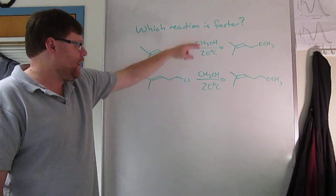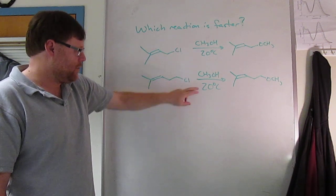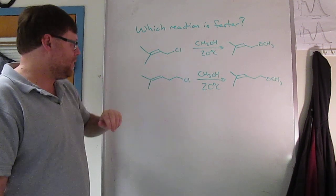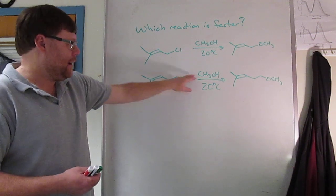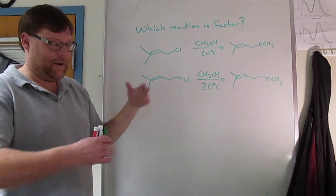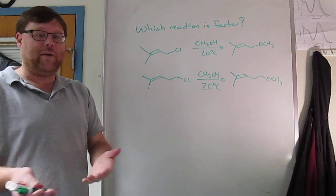Everything else is the same: methanol, 20 degrees, chloride leaving group. If this were say a bromide and I used methoxide, if I make a lot of changes, there's no way for you to figure out or predict what will happen.